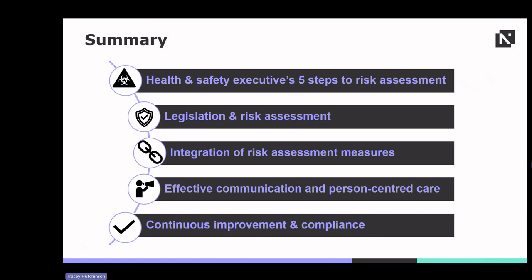To summarise, the Health and Safety Executive's five steps to risk assessment are: identify hazards systematically, determine who might be harmed, evaluate risks and implement proportionate control measures, record findings and implement control measures, and regularly review and update risk assessments.